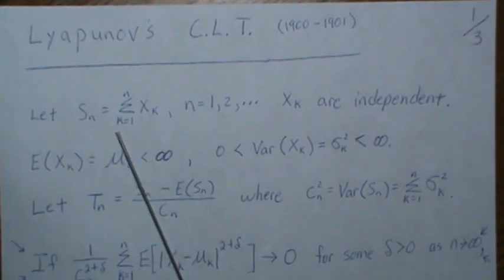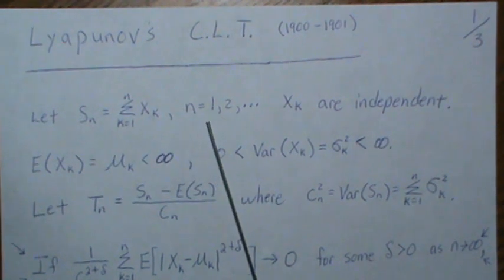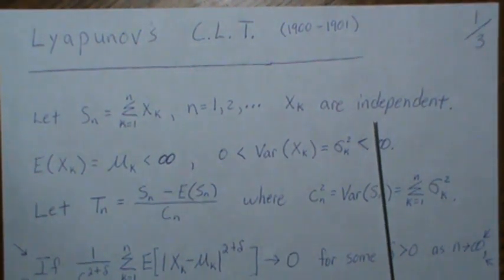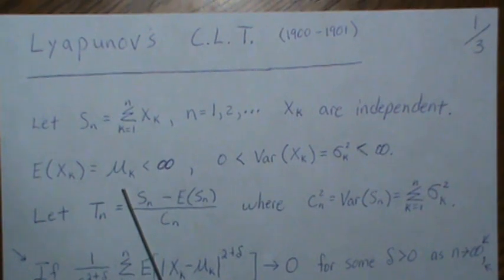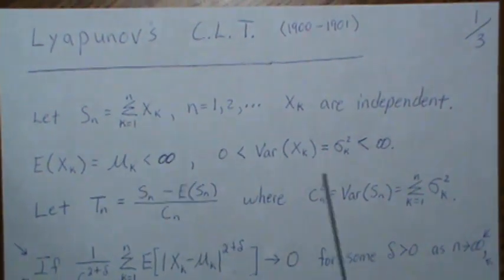Let Sn be the sum of these random variables Xk from n equals 1 to infinity. Xk are independent, not identically distributed so they can have different means and different variances, both finite.